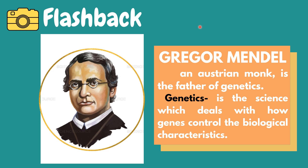Gregor Mendel is an Austrian monk and also known as the father of genetics. Genetics is the science which deals with how genes control the biological characteristics of an organism. Through his work on pea plants, Mendel discovered the fundamental laws of inheritance. He deduced that genes come in pairs and are inherited as distinct units, one from each parent. Mendel tracked the segregation of parental genes and their appearance in the offspring as dominant or recessive traits.